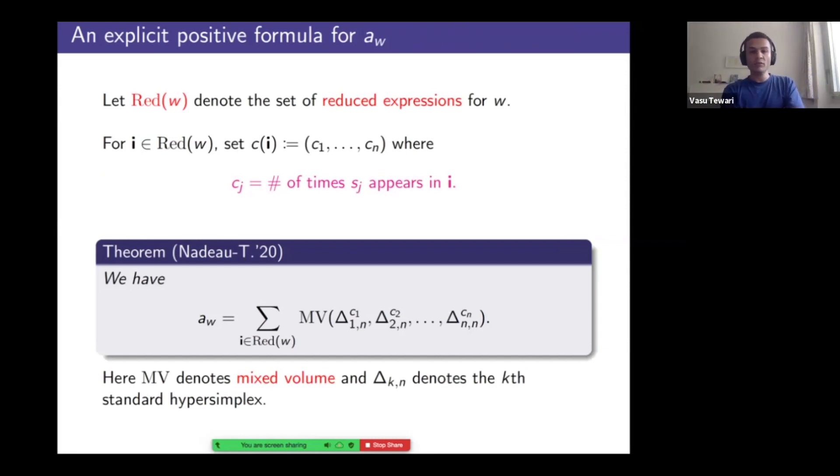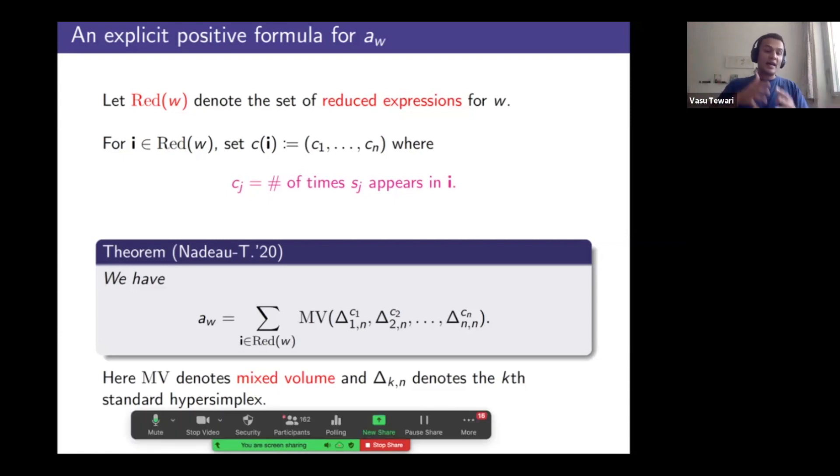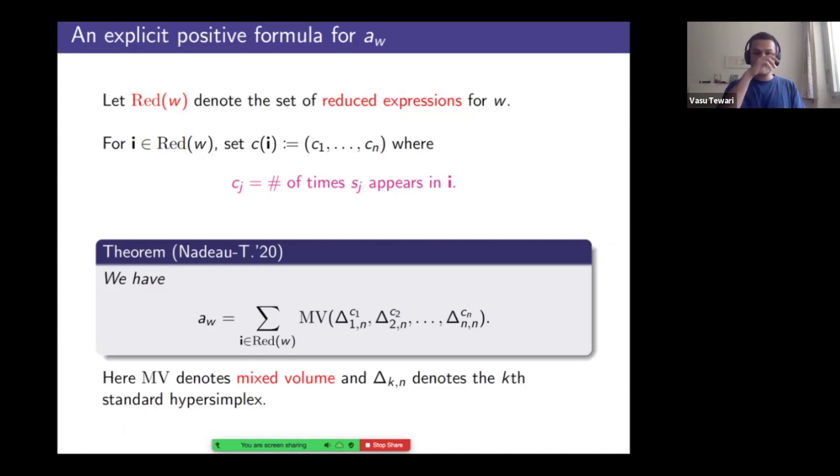But we happen to find the answer for A sub w at a tiny cost by working in a different ring. And this is our last result. So here's a positive expression for the A sub w. Think permutations w and red w is the set of reduced expressions for this permutation. For every reduced expression, I'm going to record the number of times every simple transposition appears in that expression. Since the permutation has length n minus one, this composition is going to have size n minus one, which is the right size. And then our result says A sub w is a certain sum of mixed volumes. So mixed volumes indexed for these expressions corresponding to standard hypersimplices with multiplicities C1, C2, and so on. And this ranges over all reduced words. So all reduced words get you certain mixed volumes, which are rational numbers. You add them and you get magically an integer. And this gets you that AW are indeed positive. And in fact, these mixed volumes can be computed. There are explicit formulae to do this task. And I will end there.